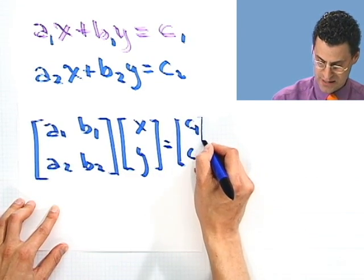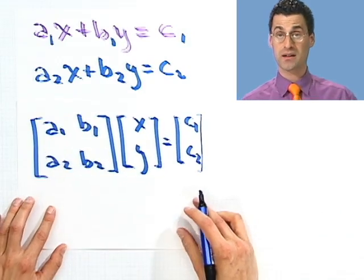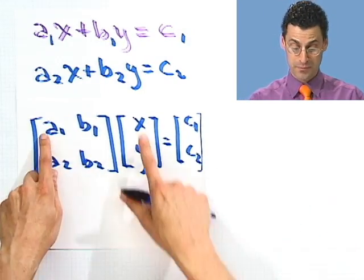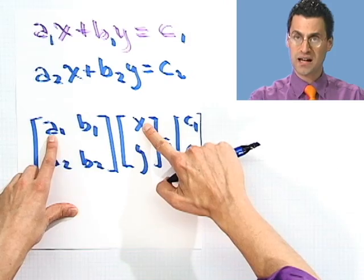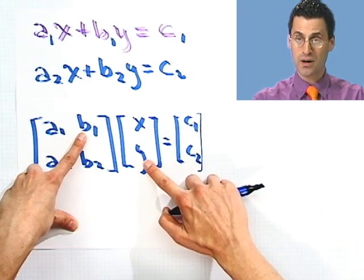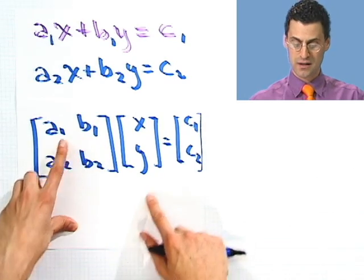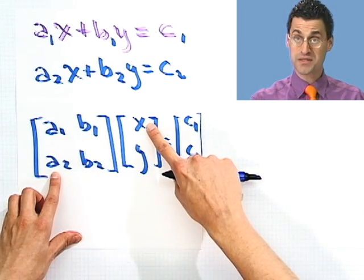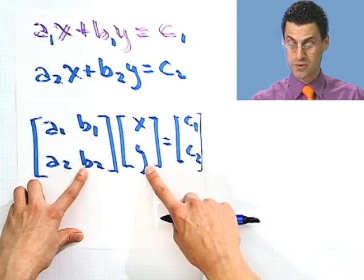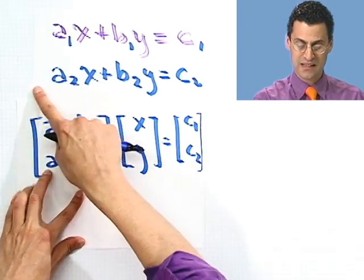Now let's think about that for a second and convince ourselves these really are the same thing. How do you multiply matrices? Well, you do this kind of thing. So this is a1 times x plus b1 times y, and that would have to be c1. Well, that's the first line. This says a2 times x plus b2 times y would equal c2. That's exactly the second line.